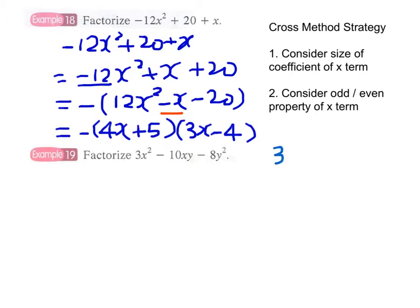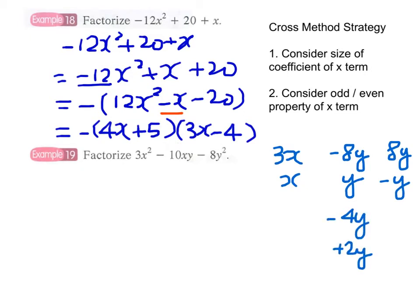We break down the 3x² term to 3x times x. For -8y², we consider factor pairs: 8y times -y, -4y times +2y, or +4y times -2y.